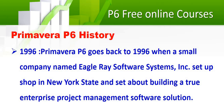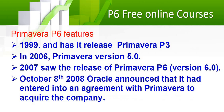The history started in 1996 when a small company called Eagle Ray Software set up shop in New York State in America and set about building a true enterprise project management software solution. In 1996 they released P3, which many people still use today for its good bar chart capability. In 2006 they released version 5, and in 2007 P6 was first launched. In October 2008, Oracle announced they had entered into an agreement to acquire Primavera.